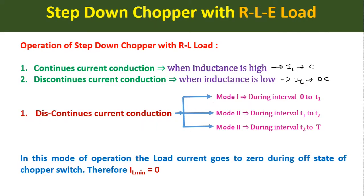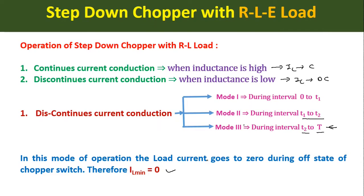Discontinuous current conduction has three modes of operation. Mode 1 occurs during the interval t = 0 to t = t1; mode 2 occurs from t = t1 to t = t2; and mode 3 occurs from t = t2 to t = T, where T is the chopping period. In discontinuous mode, the load current goes to zero during the off state of the chopper switch, so IL minimum equals zero. In continuous current conduction mode, IL minimum is a finite value and the current never reaches zero.